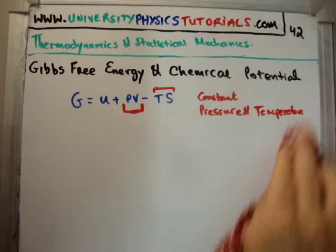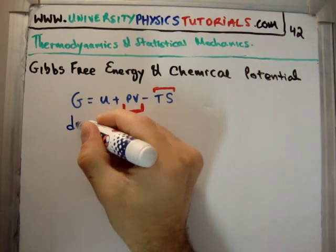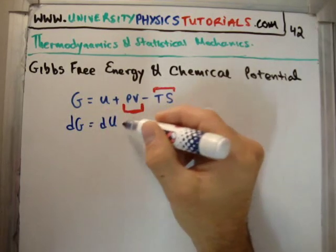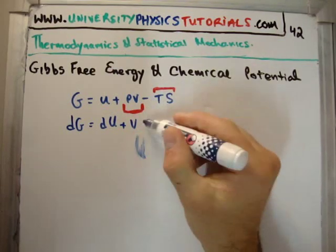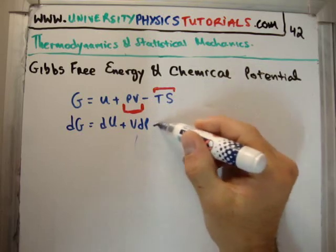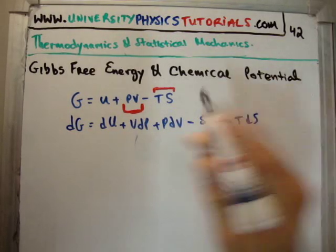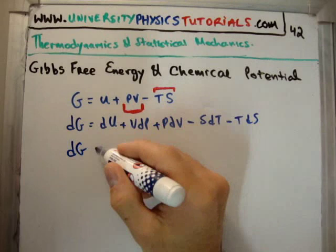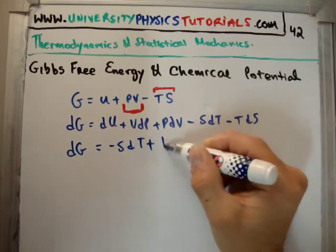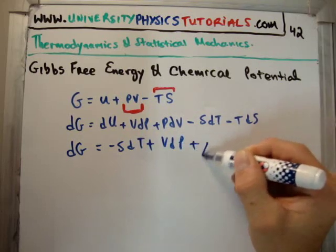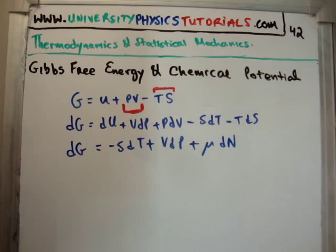So where do we go from here? Well, we also saw that the infinitesimal change in G was going to be, DG is equal to DU plus VDP, and it's supposed to be VDP, plus PDV, minus SDT, minus TDS. That's just by the product rule. So when we subbed in the first law and cancelled out the remaining term, we got minus SDT plus VDP plus mu DN, was equal to the infinitesimal change in the Gibbs free energy.